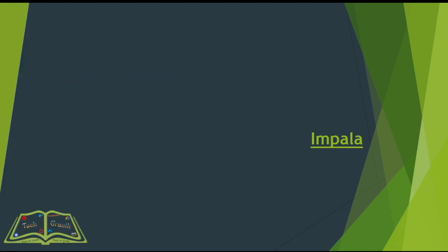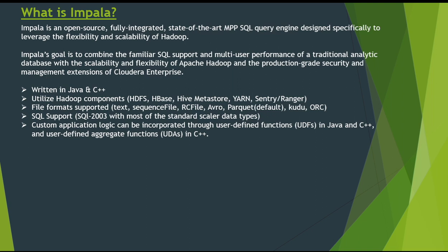Impala's main goal is to combine the familiar SQL support and multi-user performance of a traditional analytic database with the scalability and flexibility of Apache Hadoop, and the production-grade security and management extensions of Cloudera Enterprise. Traditionally we were using SQL language to perform analytics processing on RDBMS databases, but now we have more requirements for multi-user performance and production-grade security and management, which is quite easy with Impala on Cloudera Enterprise. The main features of Impala are that it is written in Java and C++.